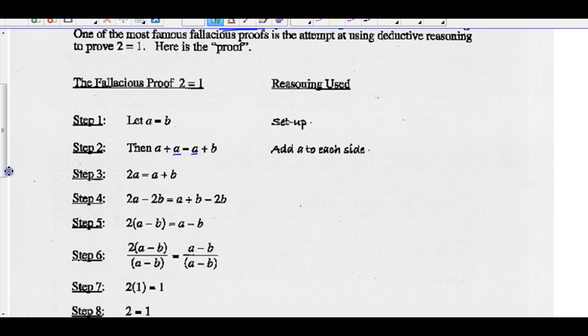Step 3, A plus A should be 2A. So all we're doing is simplifying. Step 4, I now subtract 2B from both sides.